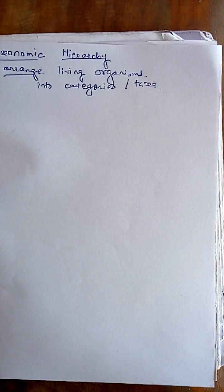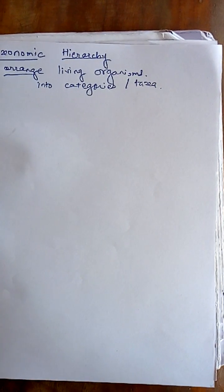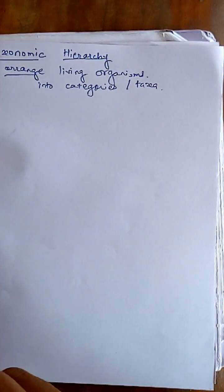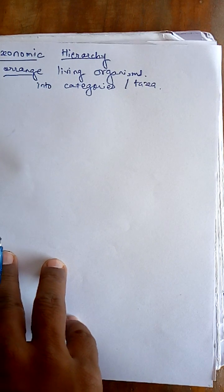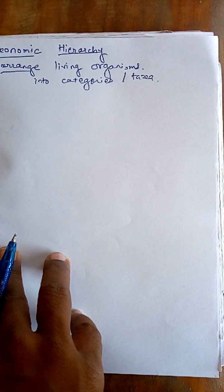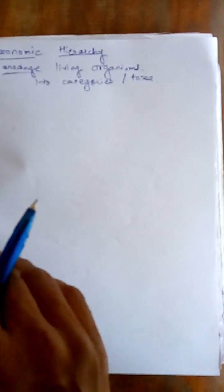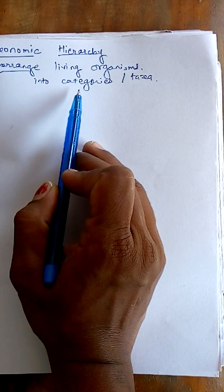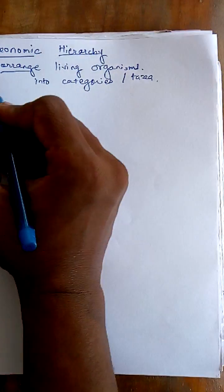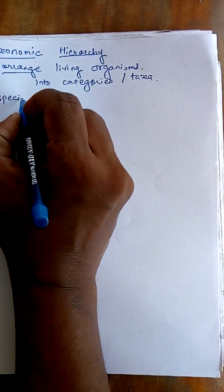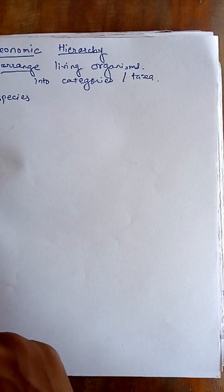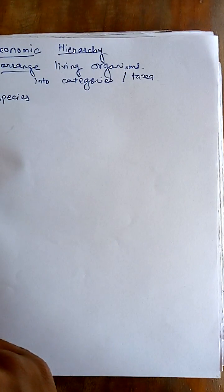When we arrange them according to ascending order, we call it as the taxonomic hierarchy. Carl Linnaeus was the first taxonomist who identified the method of classifying organisms. There are many different levels or categories — for example: species, genus, family, phylum, class, kingdom, and order. These are the different types of categories.